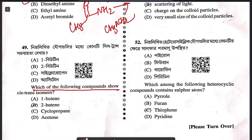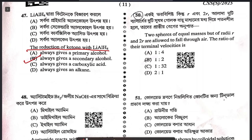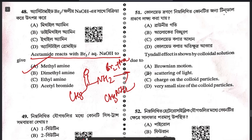Question 49: which of the following compounds shows cis-trans isomerism? 2-butene shows cis-trans isomerism. Question 50: two spheres of equal masses but radii R and 2R are allowed to fall through air. The ratio of terminal velocity is directly proportional to the square of the radius. Answer A.